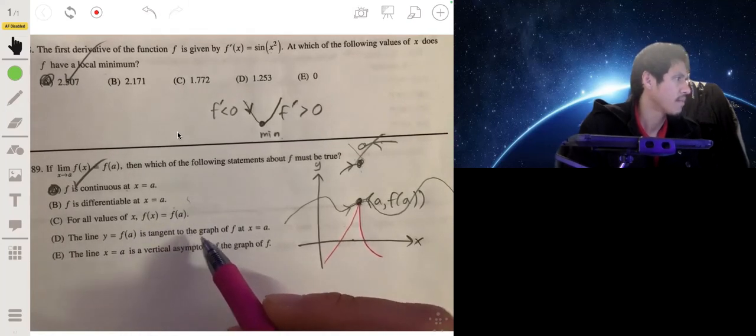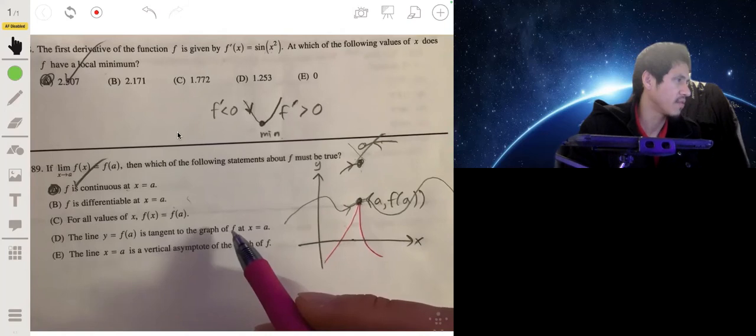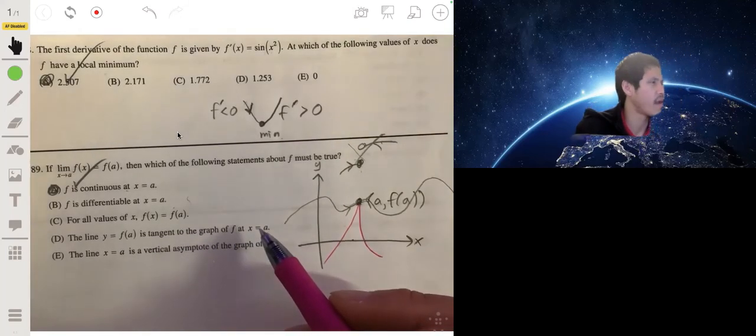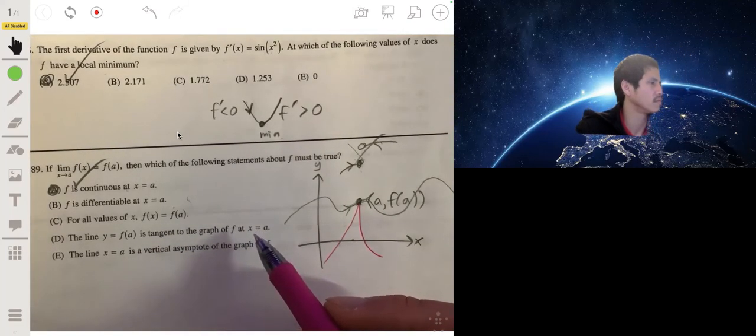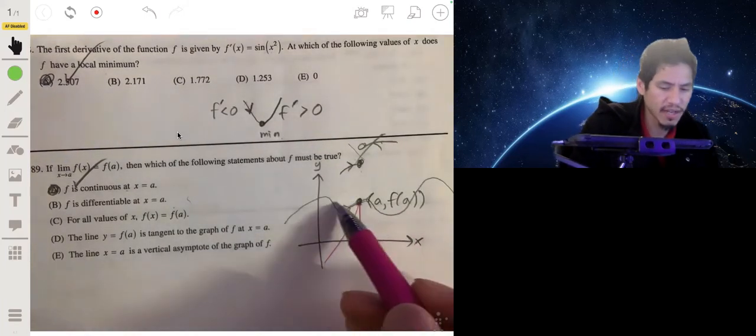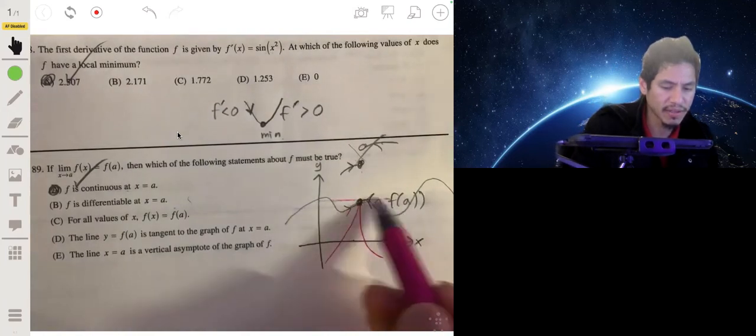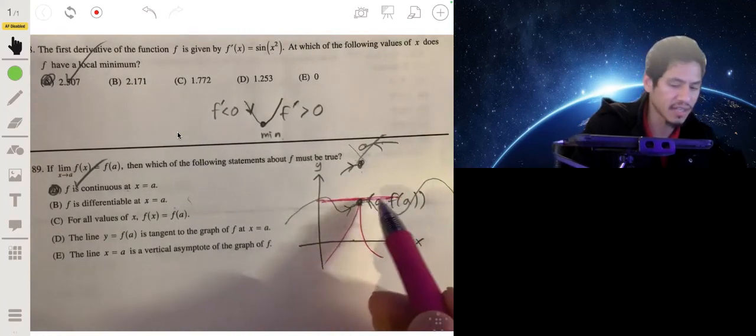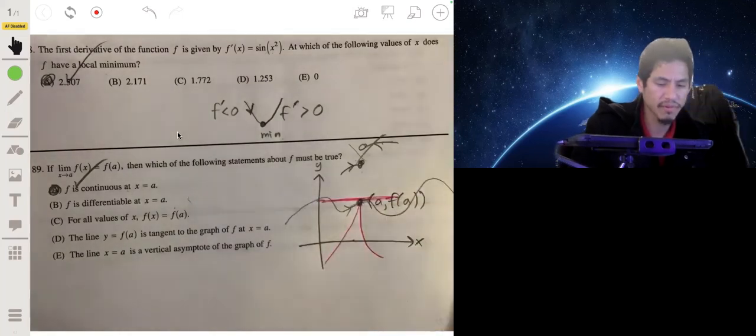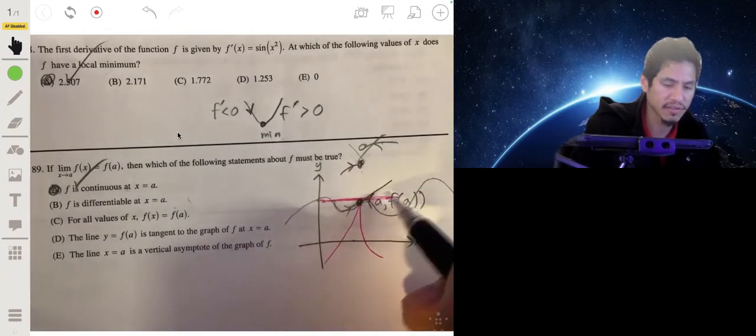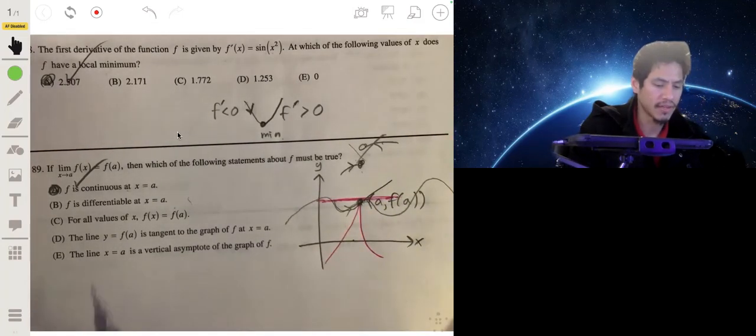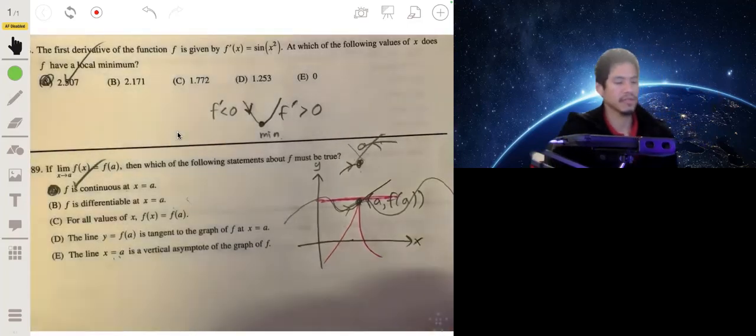And then the line y equals f of a is tangent to the graph of f at x equals a. Oh no, that's basically saying that if you have a line, like maybe the horizontal line would have to be the tangent line. It's not true. You could have again, you could probably have like that. So definitely not. Very collaborative. So anyways.